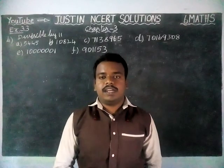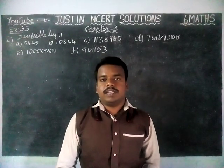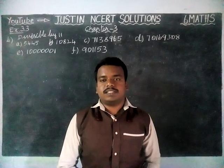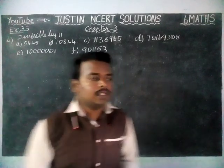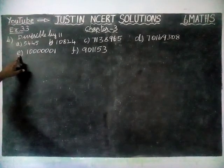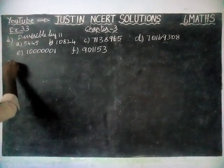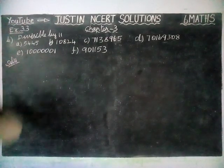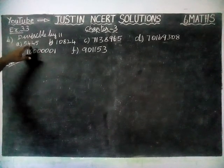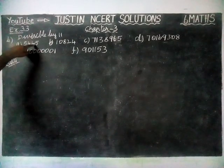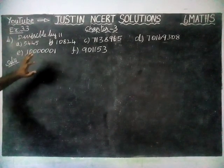Hi students, welcome to Justinian NCRT Solutions. In this video, we are going to see Class 6 Maths, Chapter 3, Exercise 3.3, Fourth Question. We are going to check whether the given numbers are divisible by 11. To check it, the difference between the sum of its odd digits and the sum of its even digits is 0 or 11 — that number is divisible by 11.